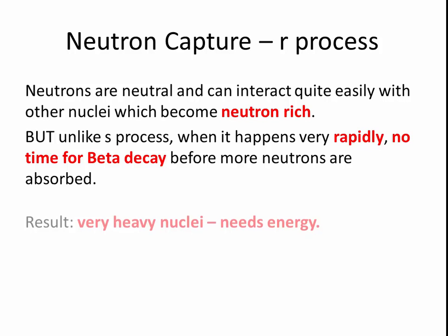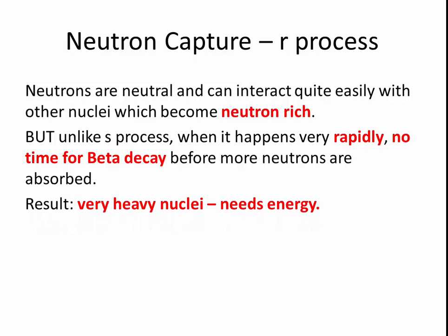So it ends up with some very, very heavy nuclei. Many neutrons need a lot of energy to produce these heavy nuclei, and it only occurs when you get a supernova.